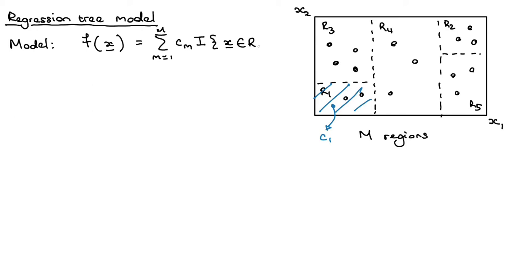The indicator function returns a 1 if the statement inside is true. So if we have some input and that input lies within region Rm, it returns a 1; for any other region it returns a 0. Let's do a little example: say we get a new input and it lies in a particular location.